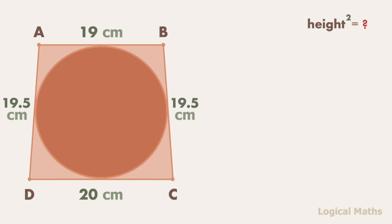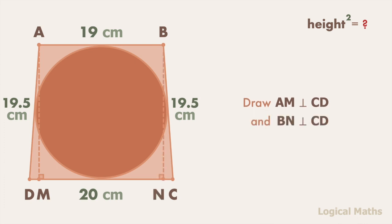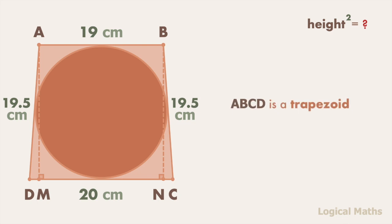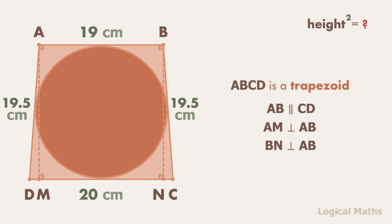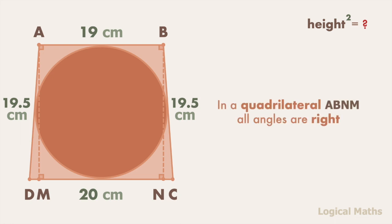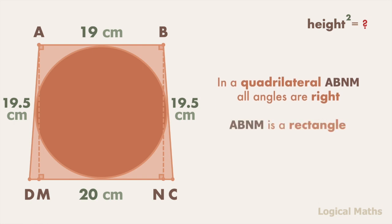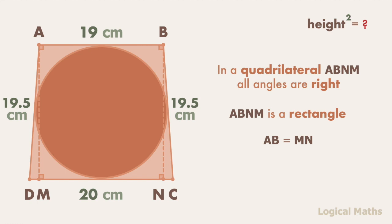Let's draw two heights of the trapezoid, AM and BN. Since AD and CD are parallel, AM and BN are both perpendicular to the base. In quadrilateral ABMN, all angles are right angles, so ABMN is a rectangle. It means the opposite sides are equal, so MN equals AB, which equals 19.